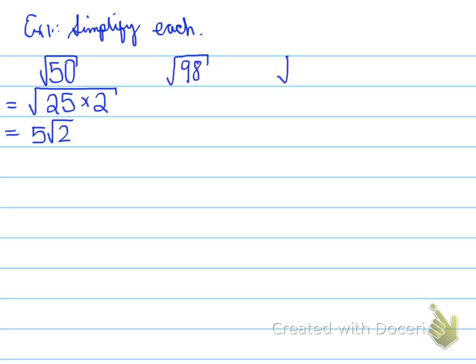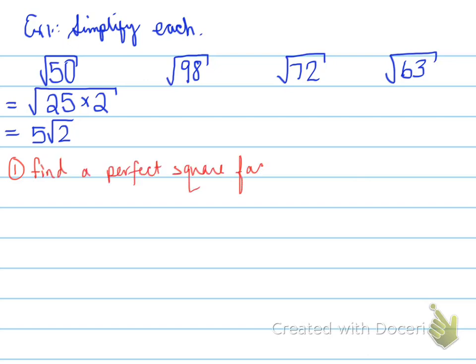Next examples: root 98, root 72, root 63. The steps to simplify each radical: step one is to find a perfect square factor — a number that divides the radicand and is itself a perfect square. Step two is to simplify that perfect square root and bring it outside. You need to know all perfect squares from 1 squared up to 30 squared.